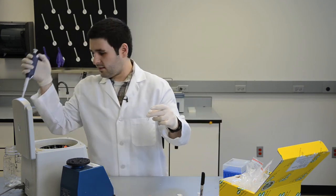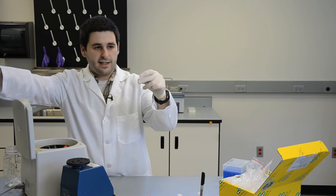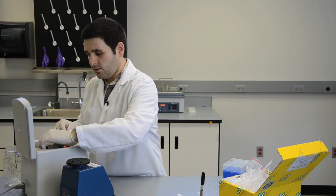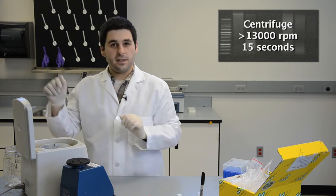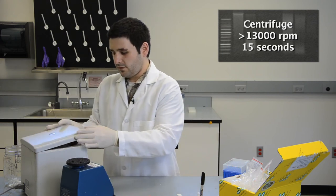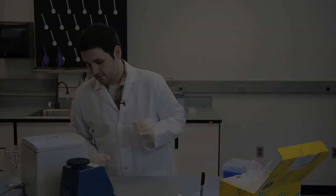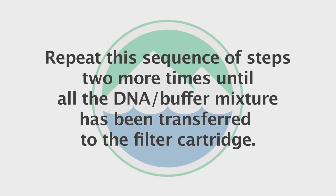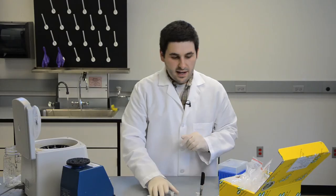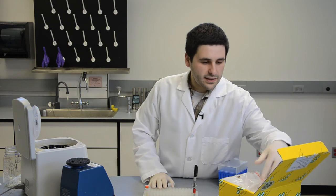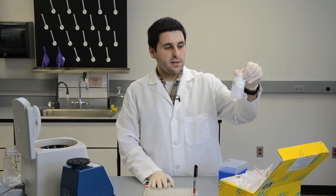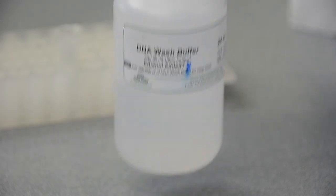Once the 700 microliters is added to the filter cartridge, we want to centrifuge that at highest speed, 13,000 RPMs for 15 seconds. Now that we have all our DNA bound to the filter, we want to add some DNA wash buffer to get all the other contaminants off of it.